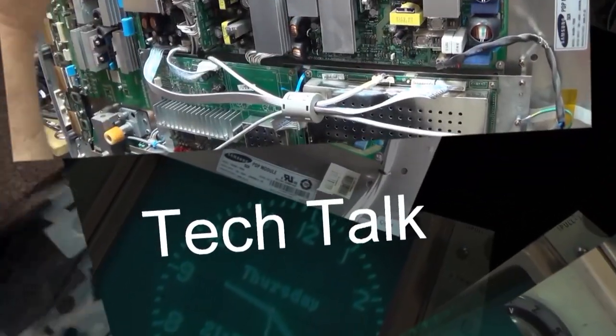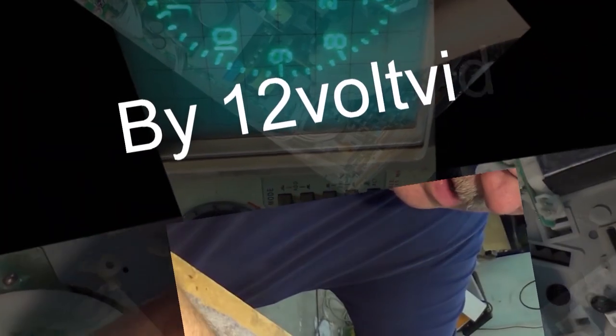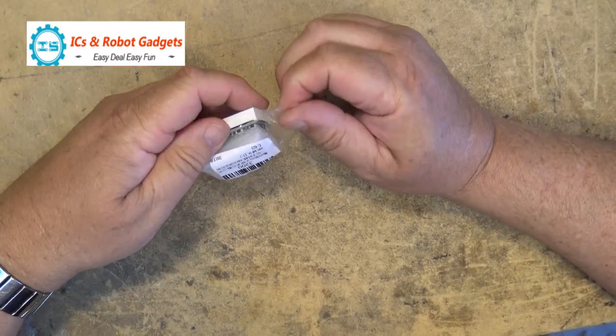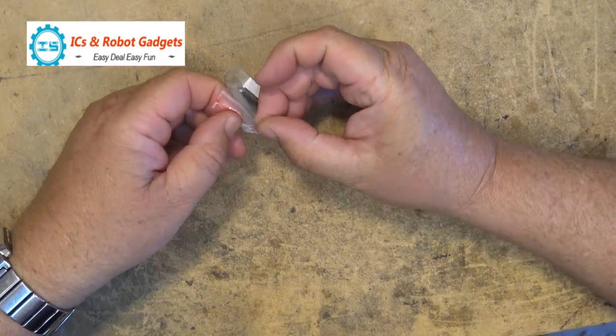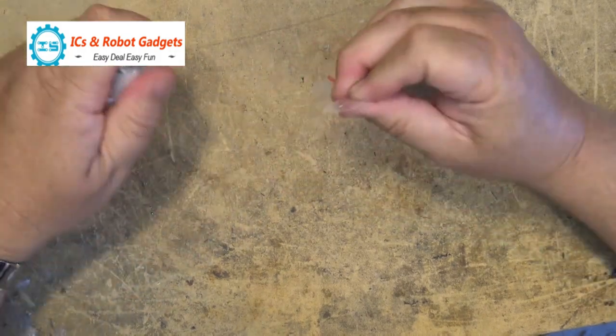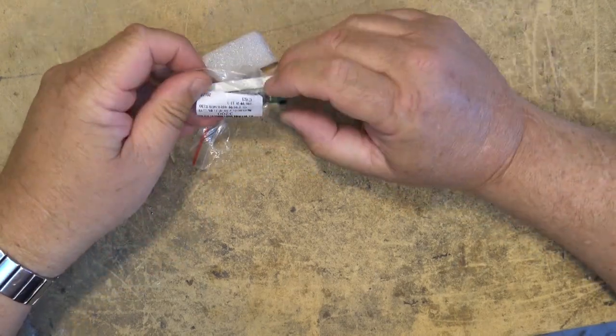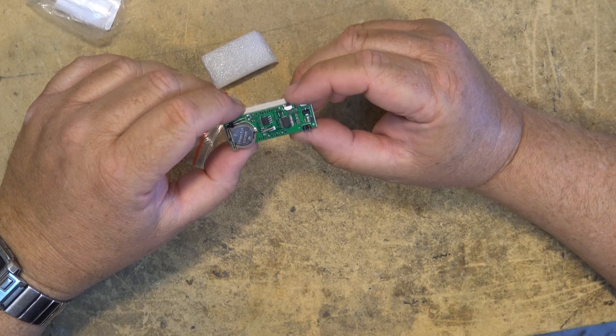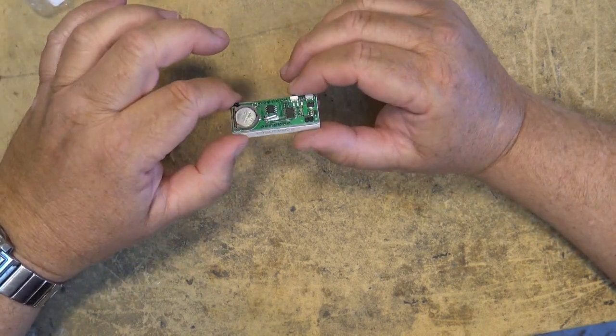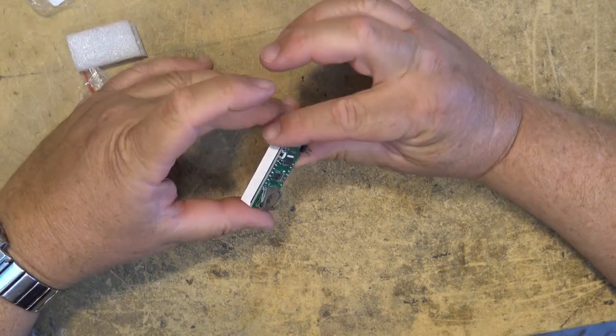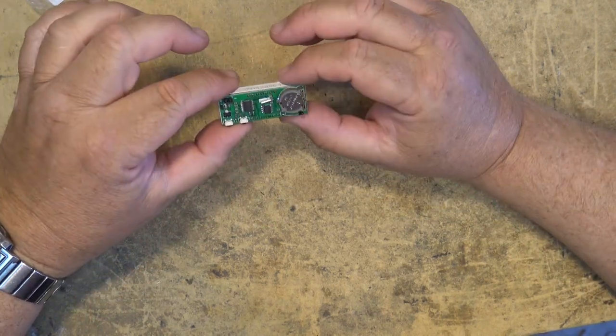Let's take a look at the operation. I received this little module today to evaluate. This one came from icstation. This looks to be a clock module, self-contained clock module with positive and negative leads. Let's take a look at how this little one works.